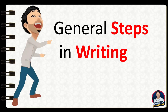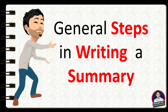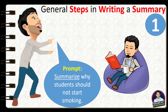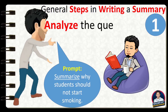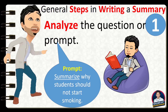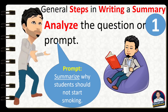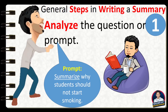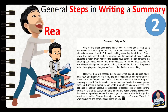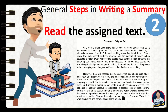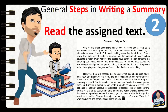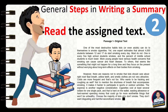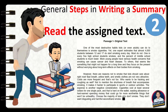General Steps in Writing a Summary. Step 1: Analyze the question or prompt. Be sure you know the text or what you are going to summarize before dealing with the text. Step 2: Read the assigned text. In order to get all the important pieces of information to be included in your summary, be sure you read the whole text first.